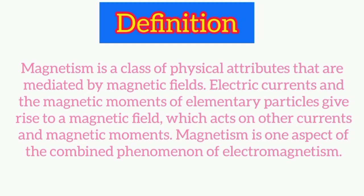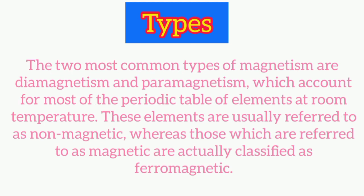by magnetic fields. Electric currents and the magnetic moments of elementary particles give rise to a magnetic field, which acts on other currents and magnetic moments. Magnetism is one aspect of the combined phenomenon of electromagnetism. Now let's see its types. The two most common types of magnetism are diamagnetism and paramagnetism, which account for most of the periodic table of elements.